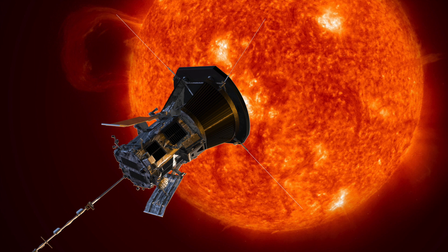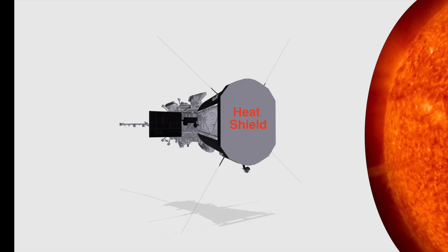The Parker Solar Probe was launched in 2018 to study the Sun's outer atmosphere. Much of the spacecraft is protected by a heat shield, but a tungsten-containing sensor which is directly placed in the solar wind can reach temperatures of 3,000 degrees Fahrenheit.